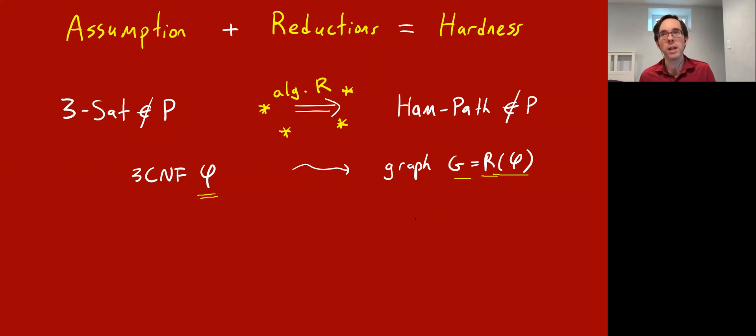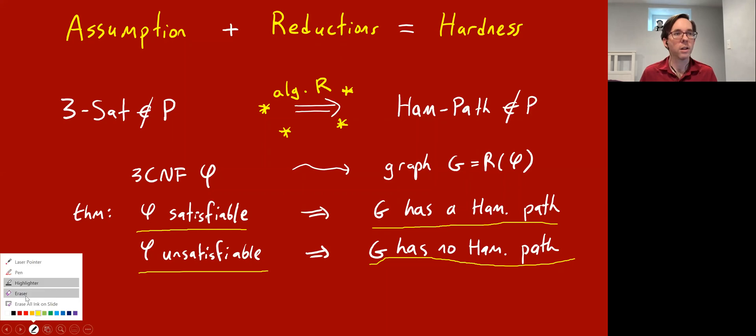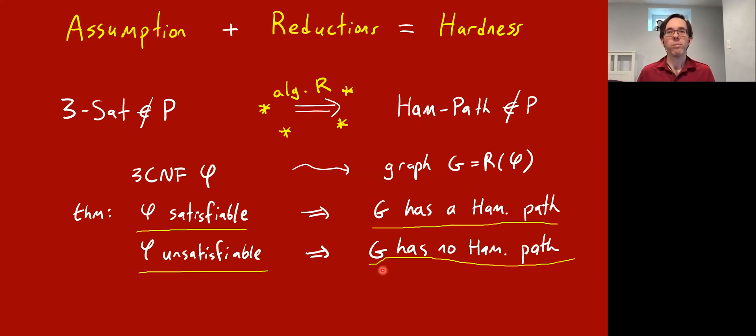The correctness property that you prove about the algorithm looks like this: if phi is a satisfiable 3CNF formula, then the G output by your reduction has a Hamiltonian path. And if phi is unsatisfiable, then G has no Hamiltonian path. This tells you that if you could solve the Hamiltonian path problem in polynomial time, then by composing that algorithm with the reduction, you would be able to solve 3CNF formula in polynomial time, which you're assuming is impossible. So that's an illustration of how you can start with a base assumption, and by designing a reduction algorithm, get a new hardness result.